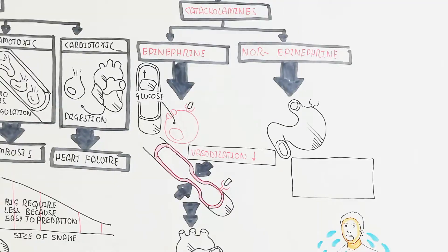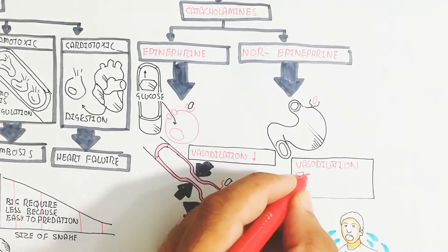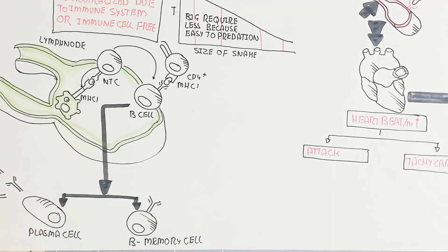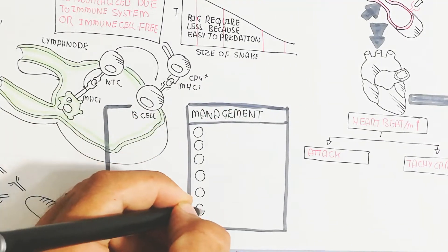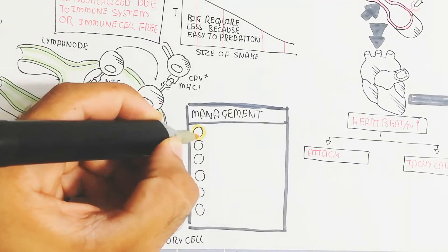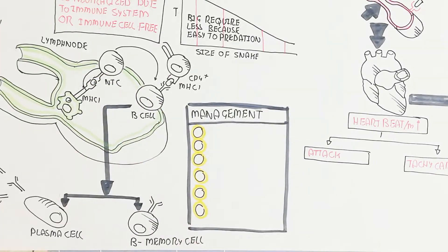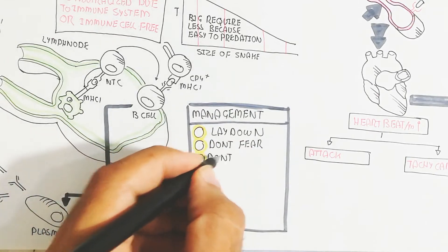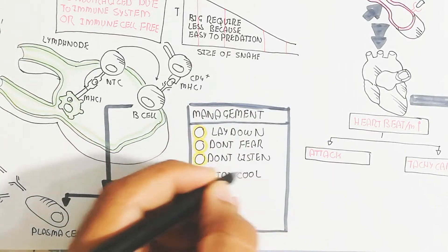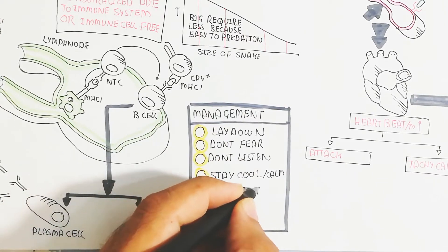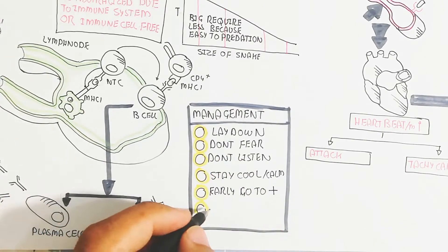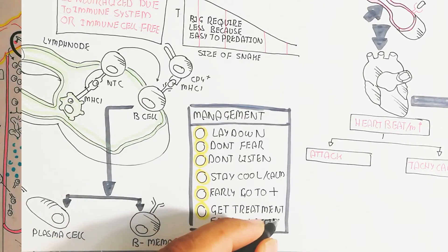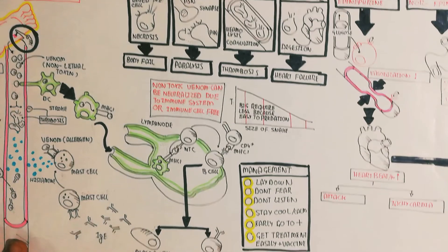Norepinephrine binding in the digestive system causes vasodilation there, stopping digestion and potentially causing vomiting. The key management advice is: do not fear, do not listen to others predicting death, stay cool and calm. Fear is harmful — go to the hospital early, get treatment, and get antivenom to prevent the venom's effects. Staying calm reduces sympathetic stimulation and slows venom spread.